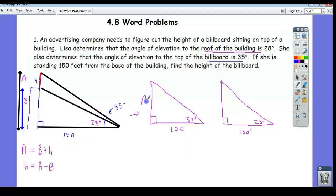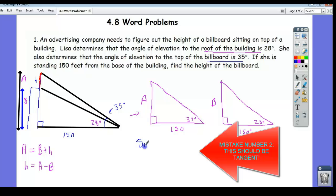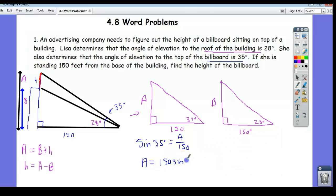And if we just find what a is, and then what b is, and then subtract them, we'll get our answer. So this should be pretty straightforward. The sine of 35 degrees is a over 150. So I can solve for a and